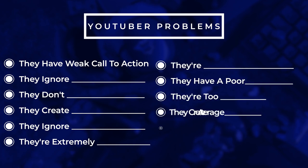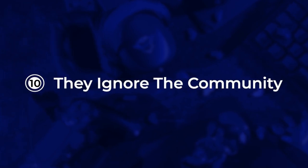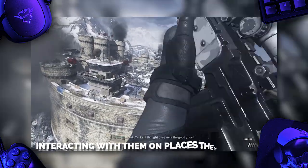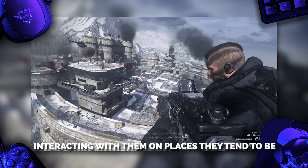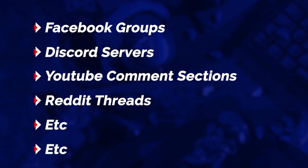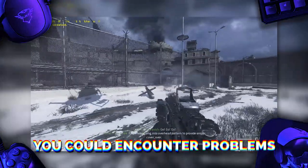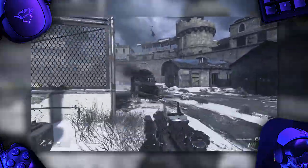The next mistake is people ignore the community — they focus on their own channel and don't become part of it. Becoming part of the community means frequenting and interacting in the places where your viewers or ideal viewers hang out. For gamers, the easiest places to find viewers are generally Facebook groups, Discord servers, YouTube comment sections, Reddit threads, etc. If you ignore these places and these people, you could encounter some problems — first of all, you won't build any relationships.